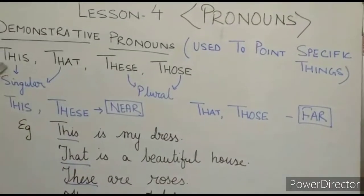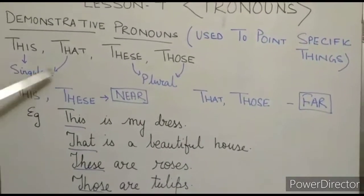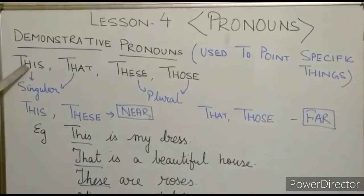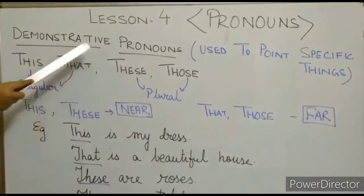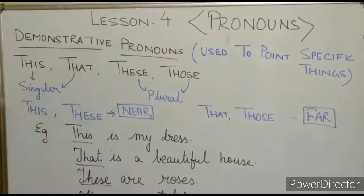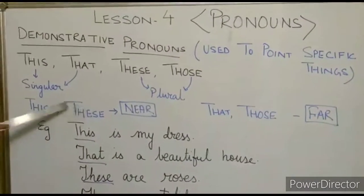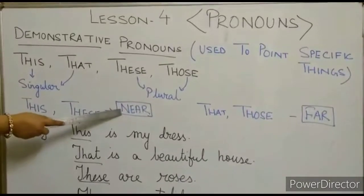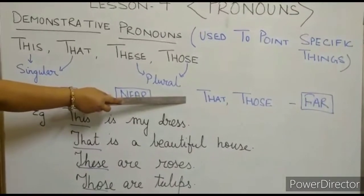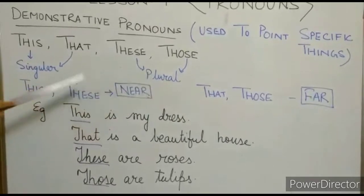Here students, 'this' and 'that' are singular forms, and 'these' and 'those' are plural forms. The singular of 'this' becomes 'these' in plural, and the singular 'that' becomes 'those' in plural. 'This' and 'these' refer to things near us, while 'that' and 'those' refer to things far away.